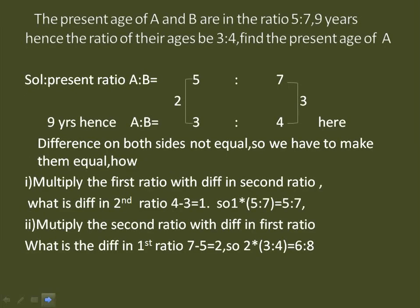Another problem in the same model: the present ages of A and B are in the ratio 5:7. Nine years hence, the ratio of their ages will be 3:4. Find the present age of A. Write down the present ratio 5:7 and the future ratio 3:4.